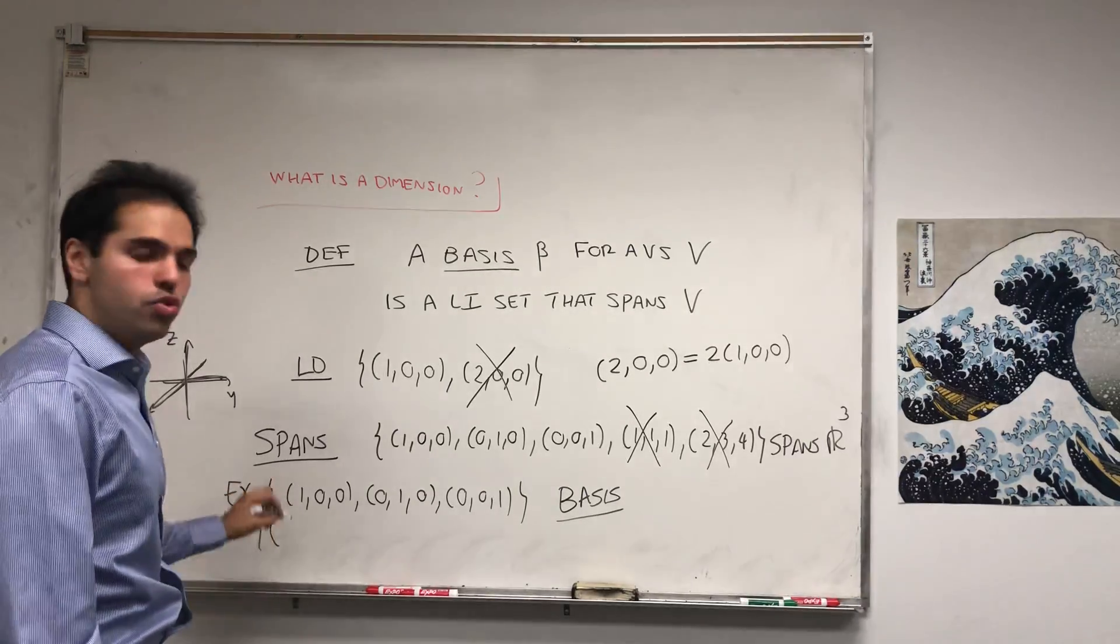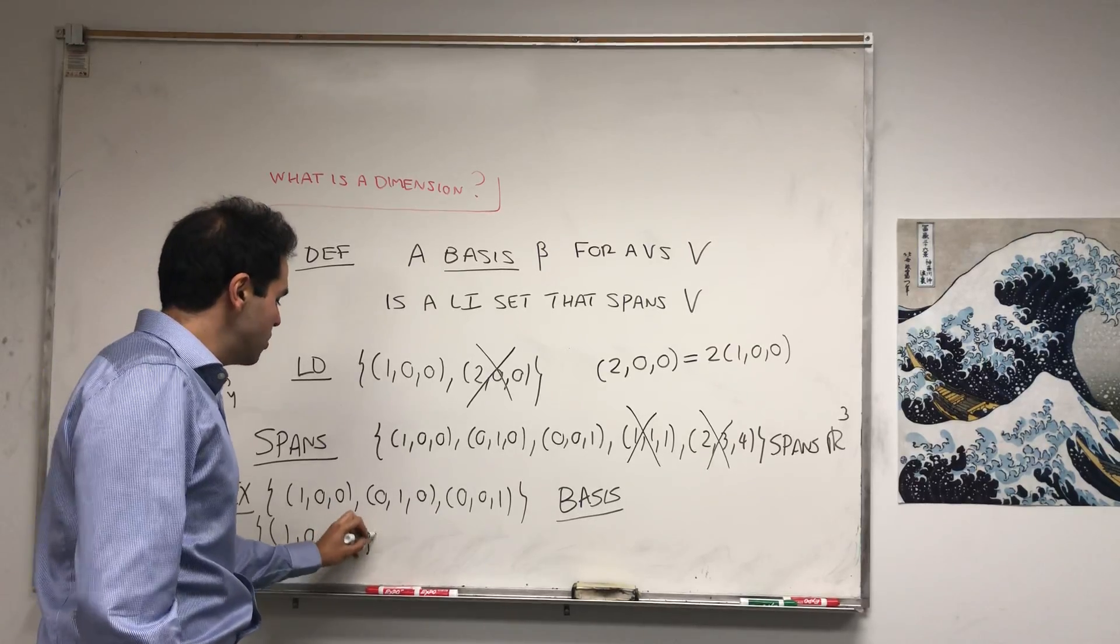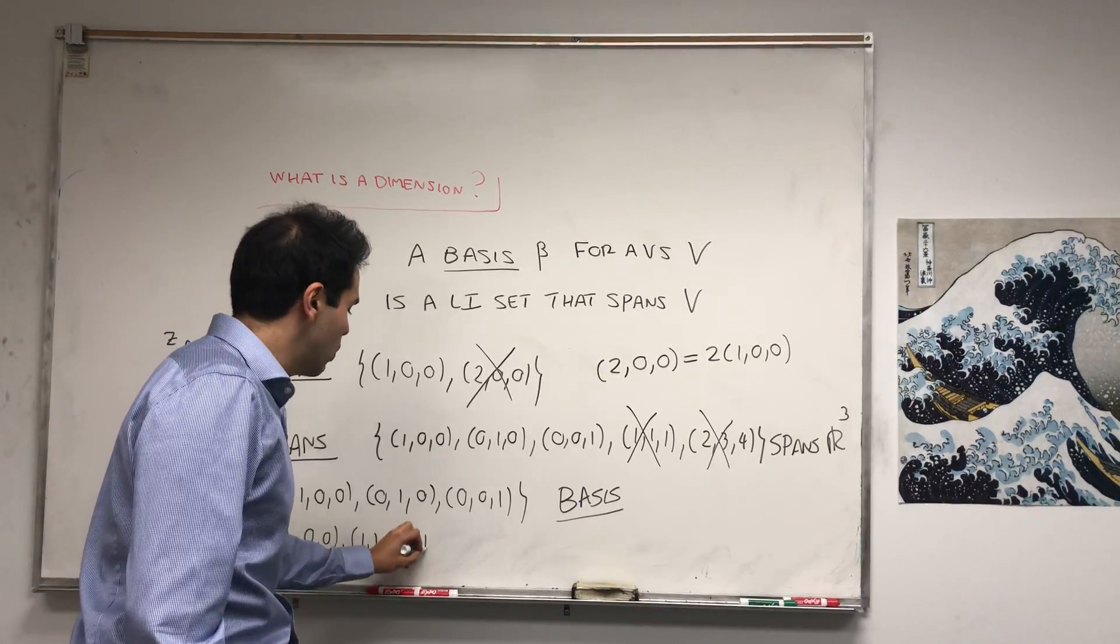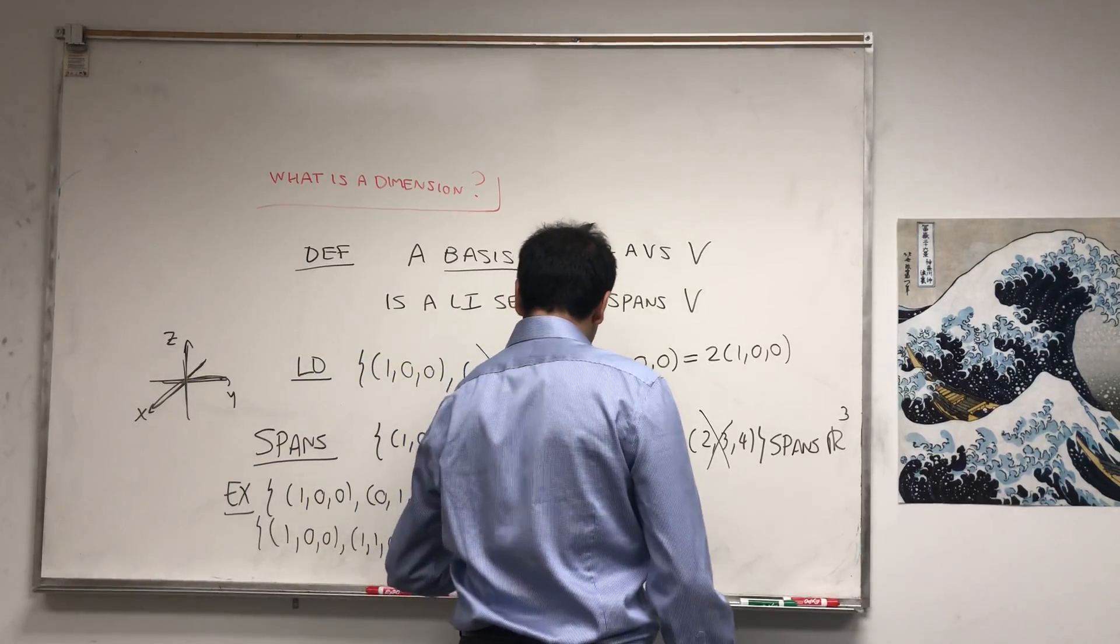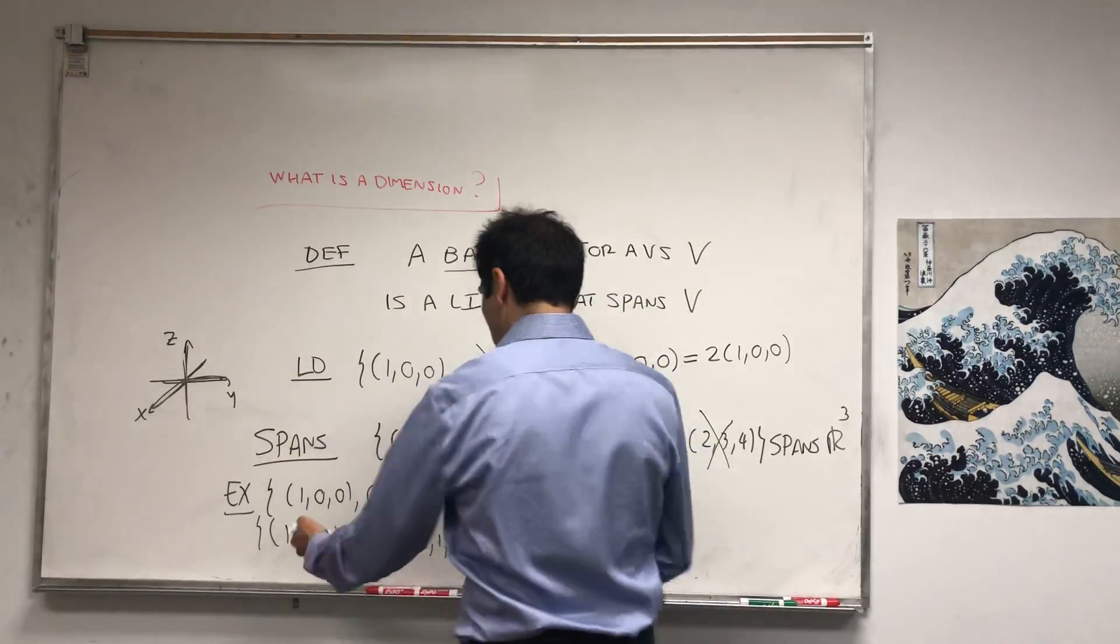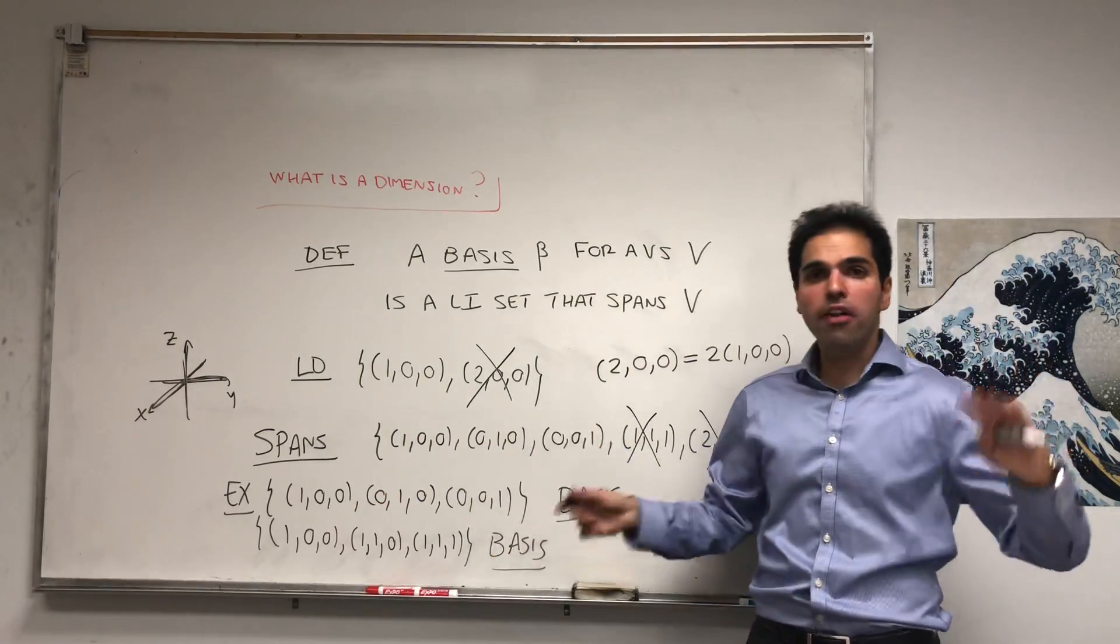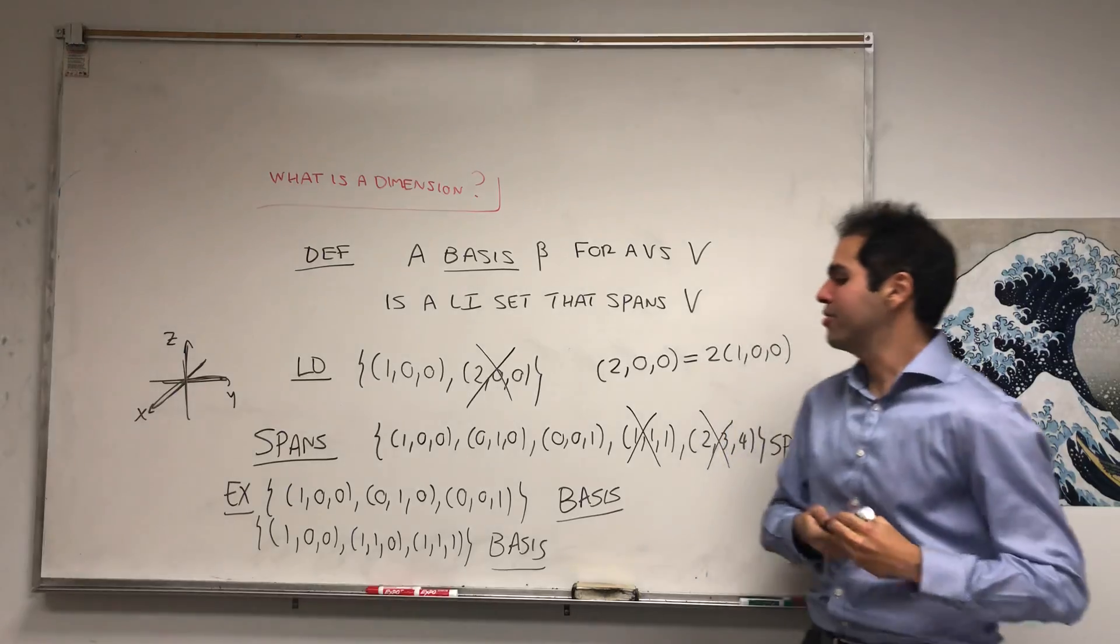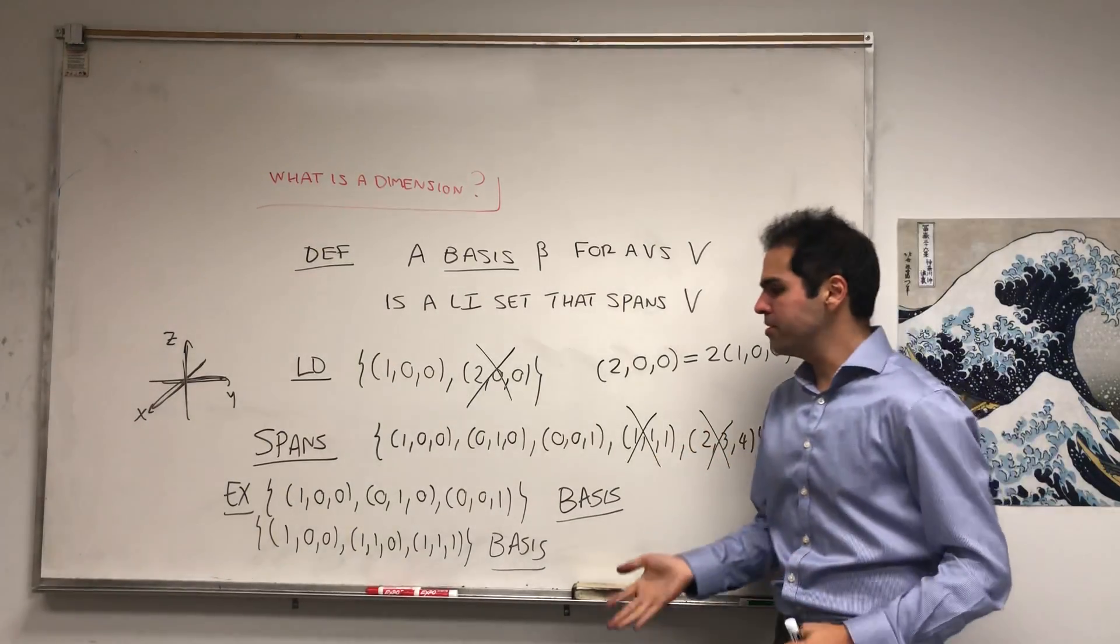But of course, bases are not unique. So we also have (1,0,0), (1,1,0), (1,1,1) - also a basis. You can show that any element you can express in terms of those vectors, and they're linearly independent. So it's very nice, they're not redundant at all. So this is also a basis.